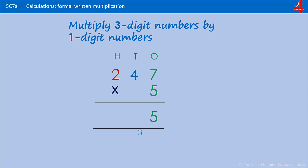In the next column we're multiplying 5 by 4. 5 times 4 is 20. We add on that 3 that we carried, giving us 23. We put the 3 in there and carry that 2, which represents 200. Now we're multiplying 2 by 5, which is 10, but we need to add the 2 that we carried over — that's 12. As there are no other digits to multiply, we just put the whole of that 12 in, and you'll see that we now have a 1 in the thousands column.